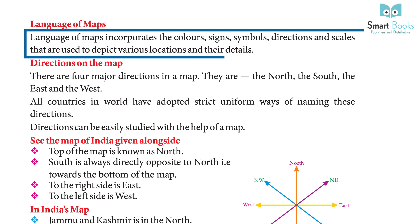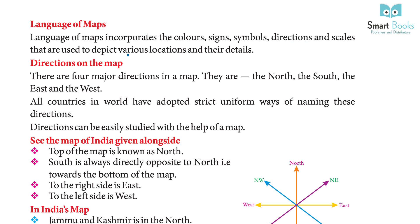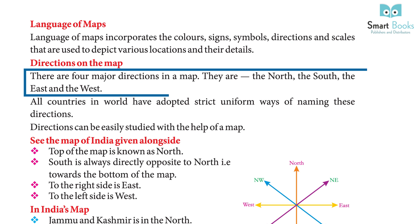The language of maps incorporates the colors, signs, symbols, directions, and scales that are used to depict various locations and their details. There are four major directions on a map: the north, the south, the east, and the west.